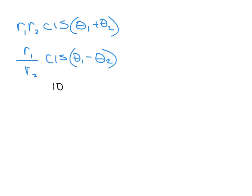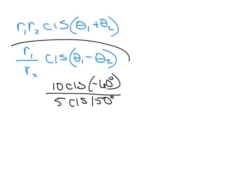Let's look at 10 cis negative 60 degrees over 5 cis 150 degrees. This is example two. We're going to follow our rule: 10 divided by 5 is 2, cis (negative 60 minus 150), and I get 2 cis negative 210 degrees. Then we split them up.